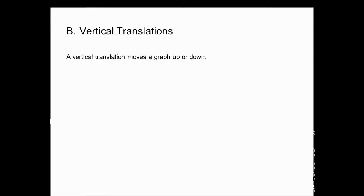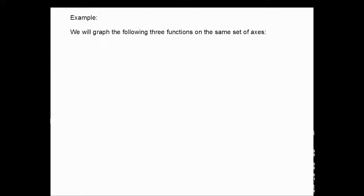Now that we have our basic graphs out of the way, we get back to our translations. There are two basic types of translations. The first is vertical translations — a movement up or down. A vertical translation moves a graph up or down; we just need to know how far.